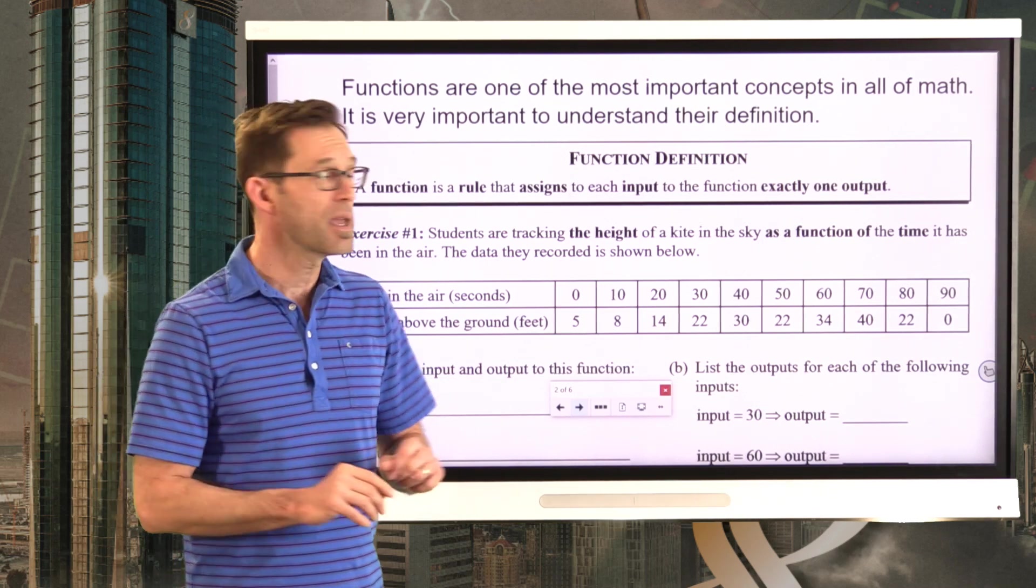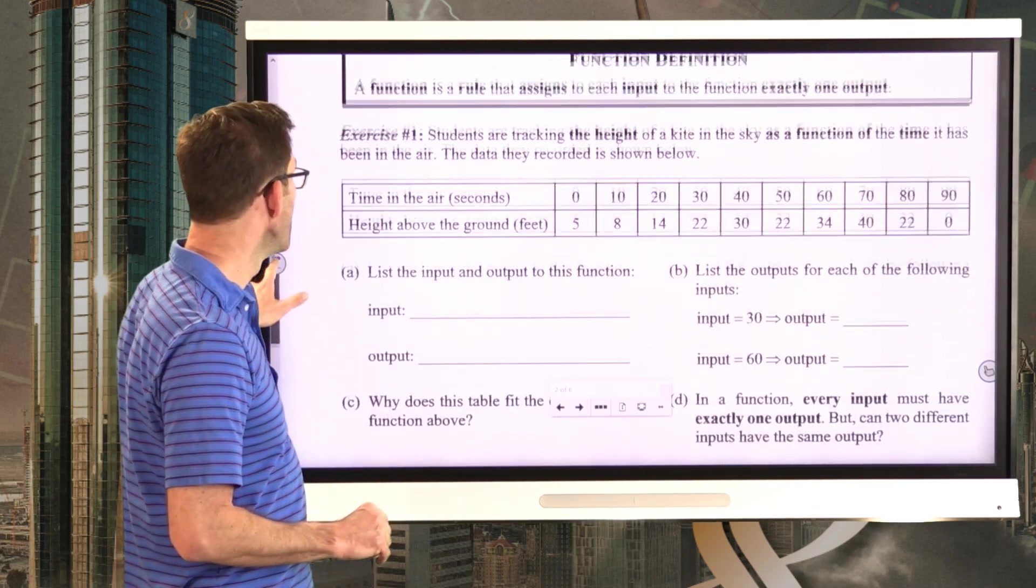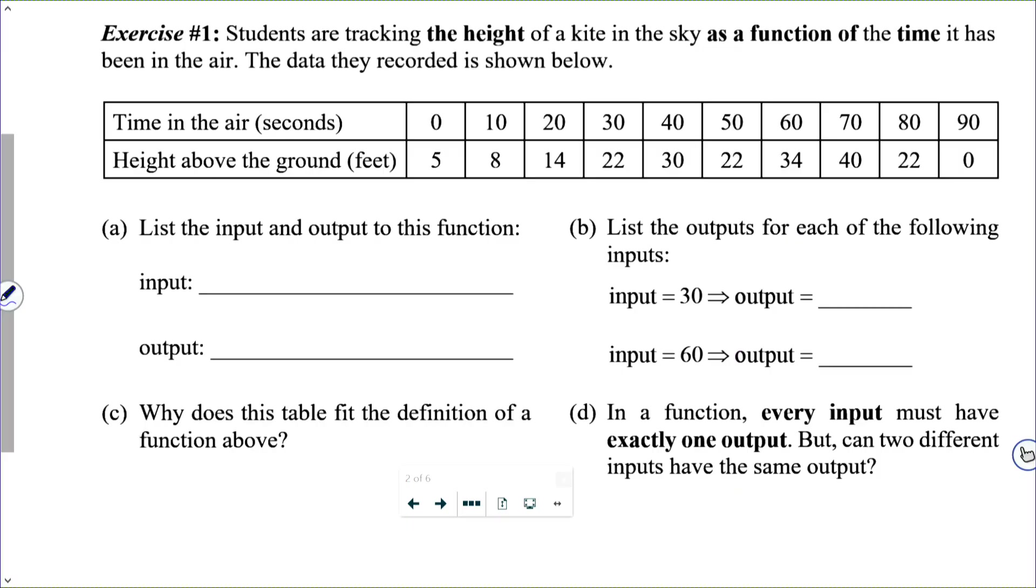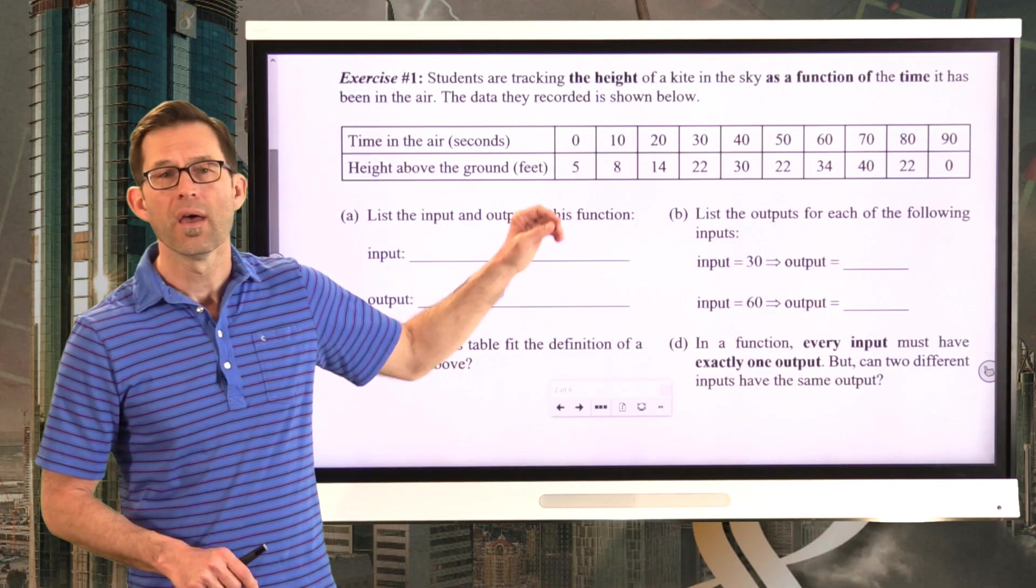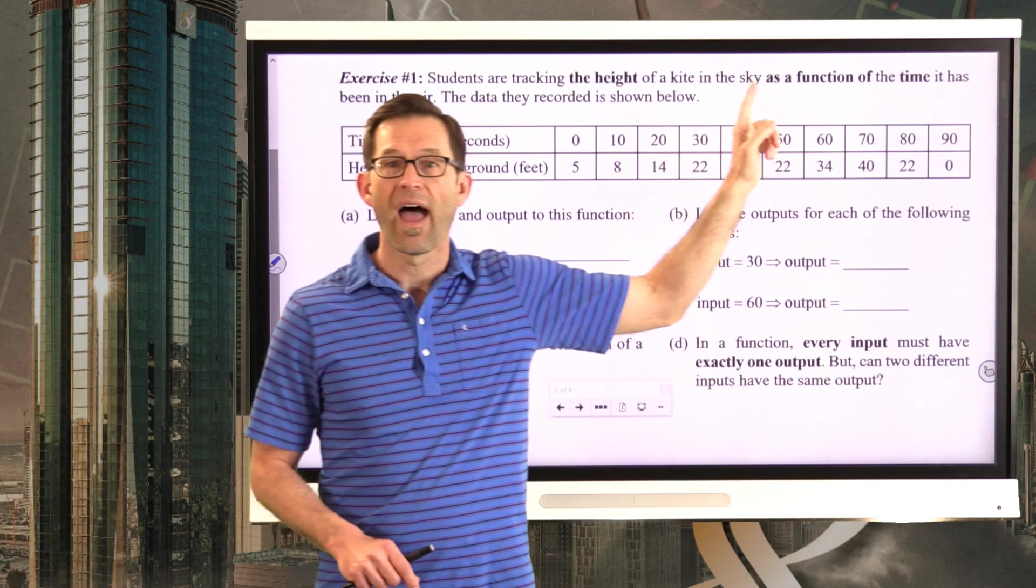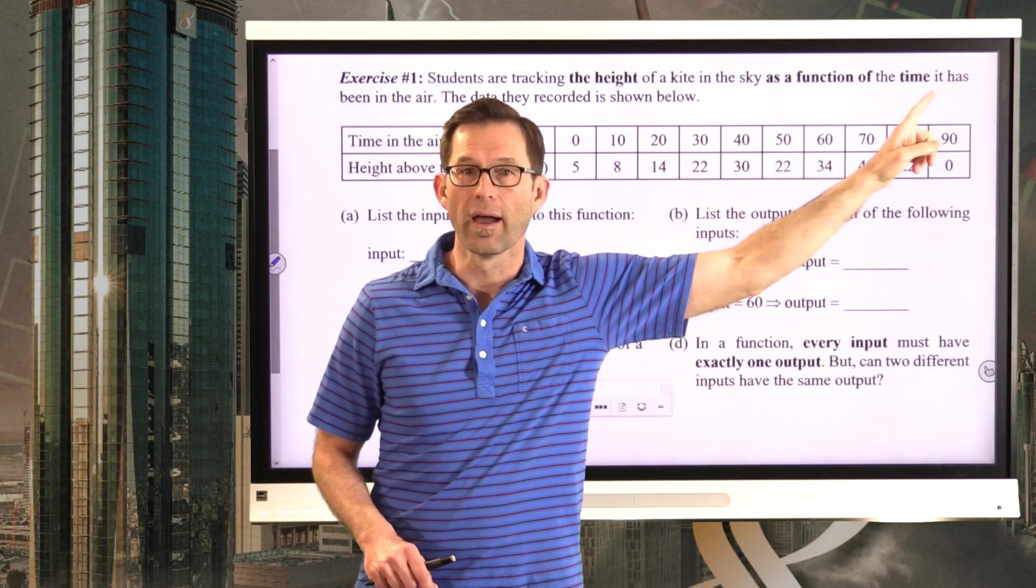Students are tracking the height of a kite in the sky as a function of the time it has been in the air. The data they recorded is shown below. Letter A lists the input and the output to this function. First, take a look at the language itself.